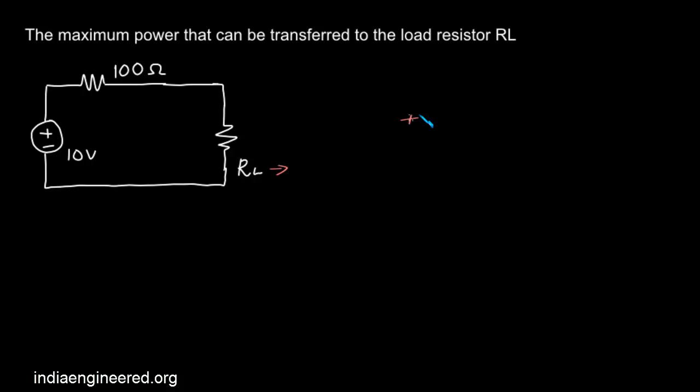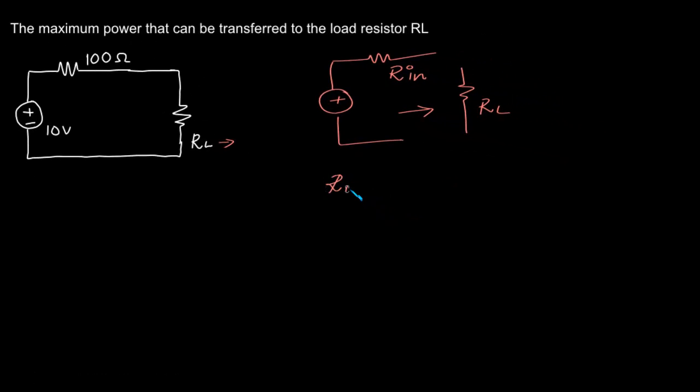If we have a source with an internal resistance R_in, then to transfer maximum power to the load resistance, we must have R_in equal to RL for maximum power transfer.